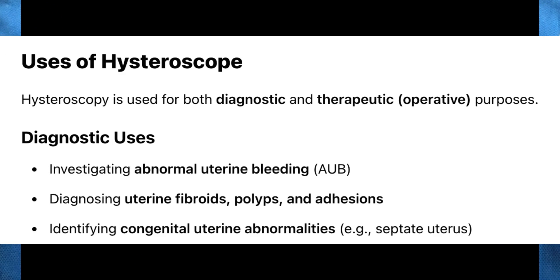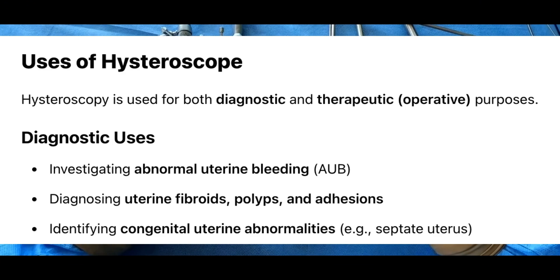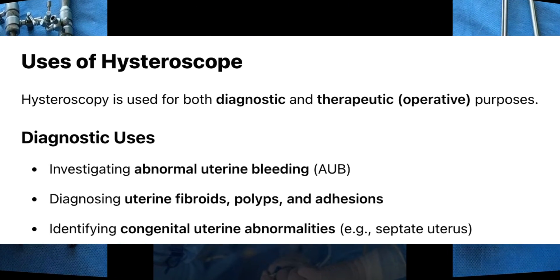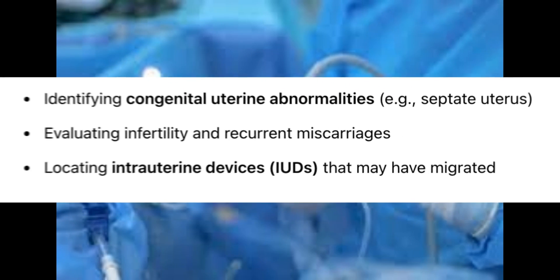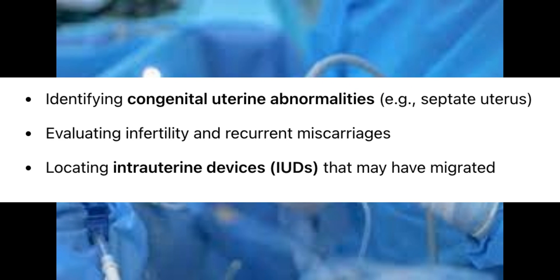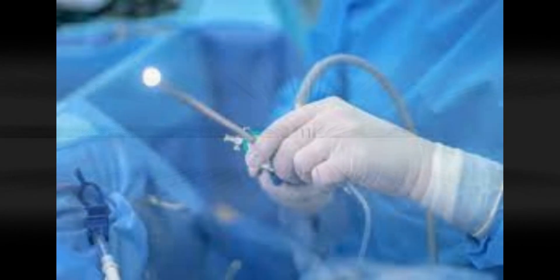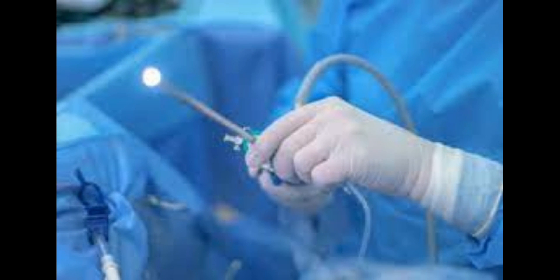Uses of hysteroscope. Hysteroscopy is used for both diagnostic and therapeutic operative purposes. Diagnostic uses include: investigating abnormal uterine bleeding (AUB); diagnosing uterine fibroids, polyps, and adhesions; identifying congenital uterine abnormalities such as septate uterus; evaluating infertility and recurrent miscarriages; and locating intrauterine devices (IUDs) that may have migrated.